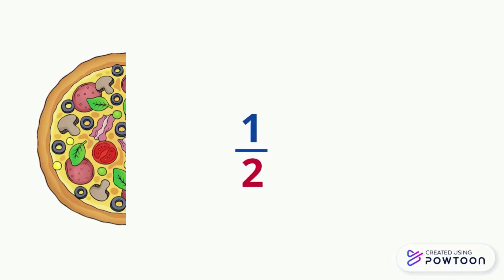The bottom number, which is 2, represents the total number of equal parts. The top number, which is 1, shows one of these equal parts that we choose. The little line here is to separate the parts that we choose from all the parts.